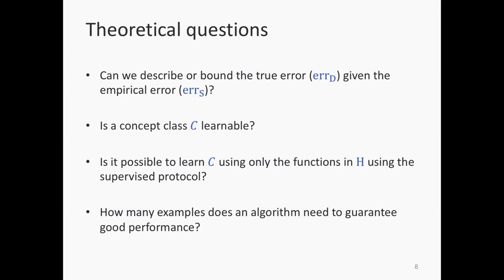Another goal of PAC learning is to ask: are certain concepts learnable? In fact, one of the striking results that falls out of the theory is that certain concepts are unlearnable — it is impossible to learn them. A further question is not just whether a concept is learnable, but whether concepts from a class C can be learned using a different set of functions H. If so, how well can we approximate? How far off from the empirical error will the true error be, and how many examples do we need to guarantee good performance — meaning true error less than some epsilon?